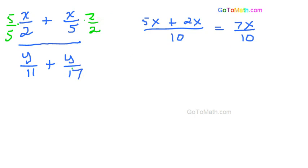Okay. Now let's look at the denominator here. We're going to have, let's go back to blue, we're going to have 17y plus 11y and that's all over 11 times 17, which is, what do we got here? So 17 plus 11 is 28y.